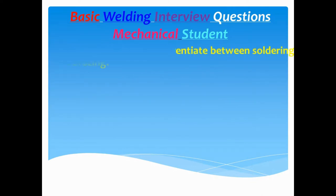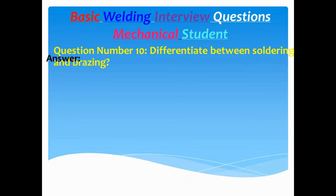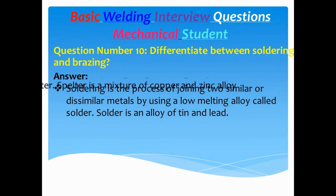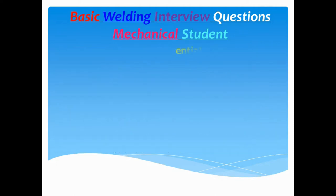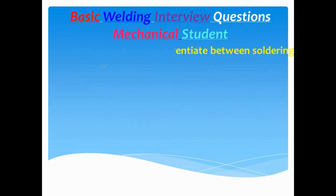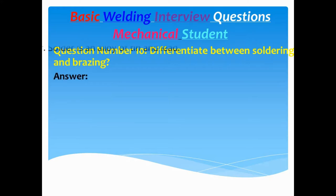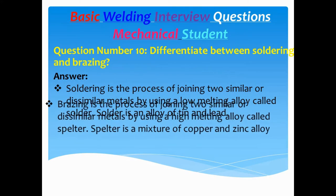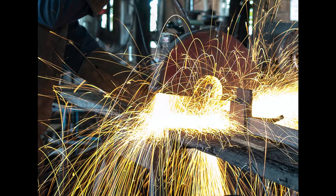Question number ten: Differentiate between soldering and brazing. Answer: Soldering is the process of joining two similar or dissimilar metals by using a low melting alloy called solder. Solder is an alloy of tin and lead. Brazing is the process of joining two similar or dissimilar metals by using a high melting alloy called spelter.